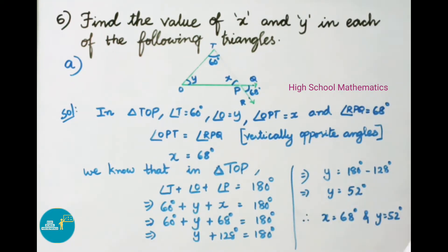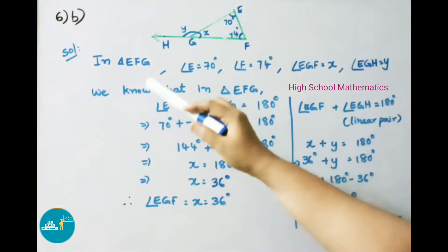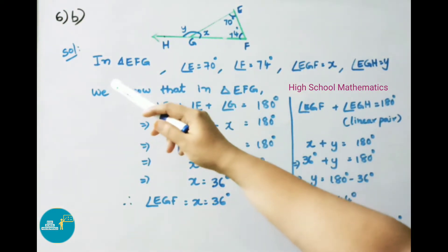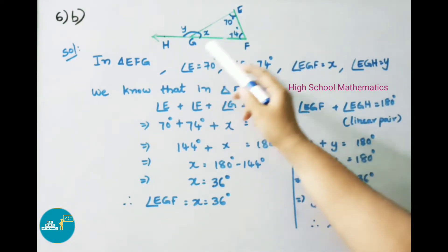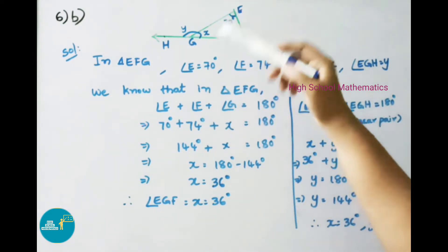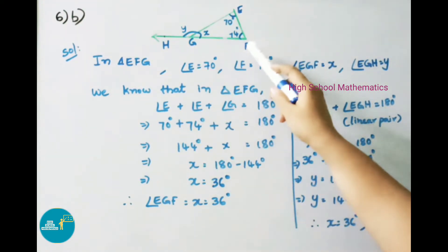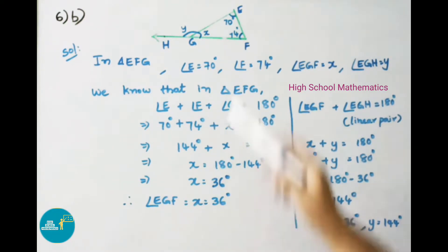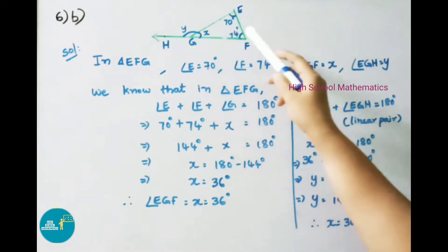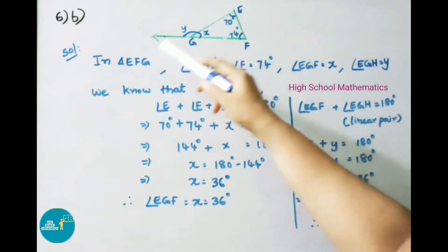See now the second part of question 6. In triangle PEG, angle E equals 70 degrees, angle F equals 74 degrees, angle EGF equals x, and angle PGH equals y.